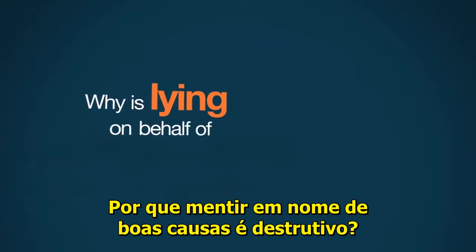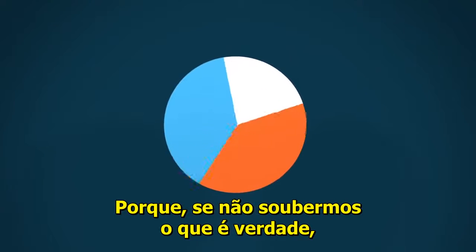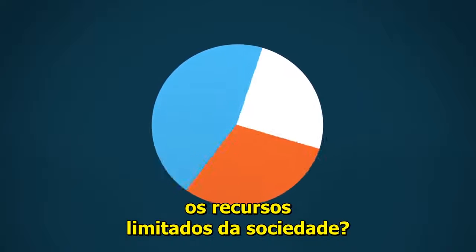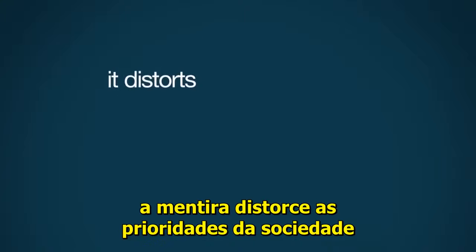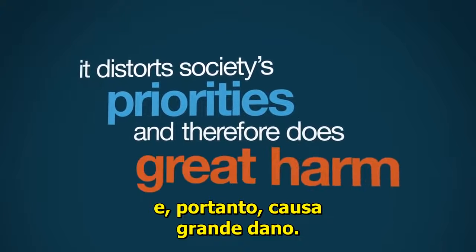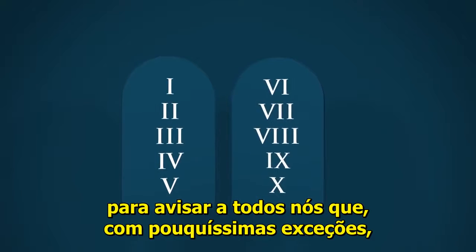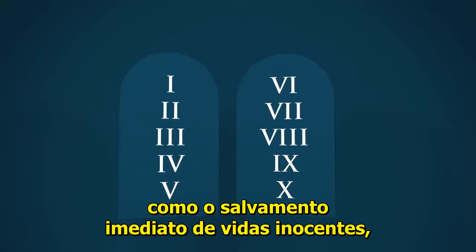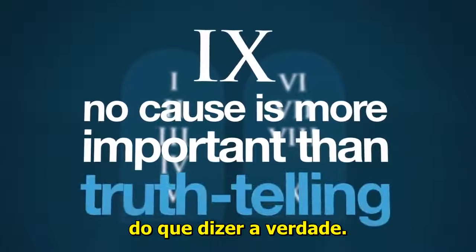Why is lying on behalf of good causes destructive? Because if we don't know what's true, how and where do we know how to properly allocate society's limited resources? And in the worst cases, it distorts society's priorities and therefore does great harm. The Ten Commandments is there to warn all of us that, with very few exceptions — such as the immediate saving of innocent life — no cause is more important than truth-telling.